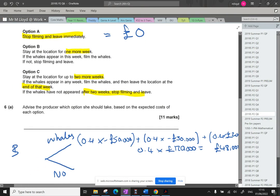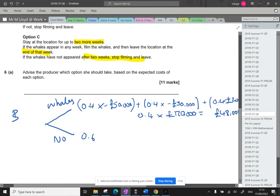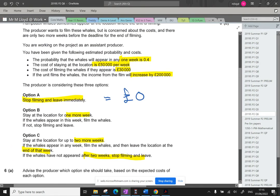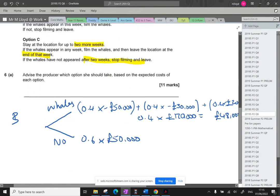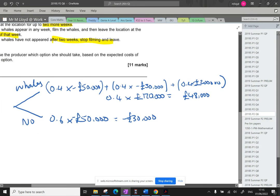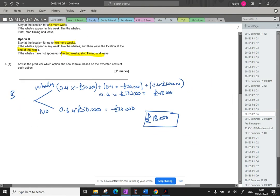Because if these whales don't turn up, it's going to cost us 0.6 times by the £50,000 cost of staying. There's no £30,000 cost because the whales don't turn up. That means we don't have to film them. And the £200,000 isn't going to come our way either. So £50,000 times by 0.6, and I should be putting that as a negative, which is negative £30,000. So our expected value for option B, when we put those together, is £18,000. And that's better than A. So it's better to stay for B at the moment.